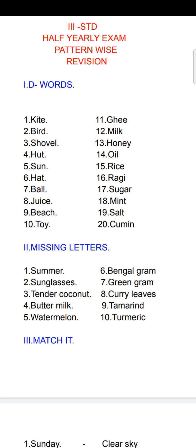Level two. Eleventh one: ghee, G-H-E-E. Twelfth one: milk, M-I-L-K. Thirteenth one: honey, H-O-N-E-Y. Fourteenth one: oil, O-I-L. Fifteenth one: rice, R-I-C-E. Sixteenth one: ragi, R-A-G-I.